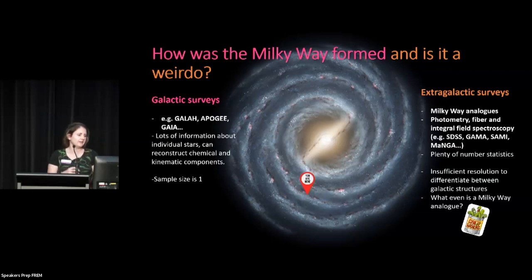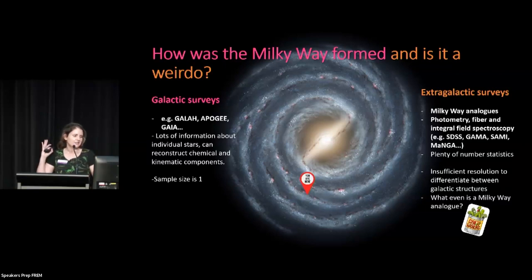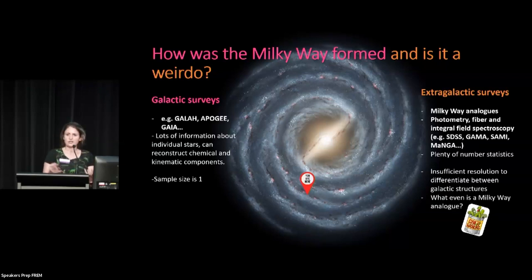So GALAH, APOGEE, Gaia — so many stars these days, all with kinematics and chemistry. We really have a great picture now of the Milky Way and the individual structures within them, both chemical and kinematic structures.